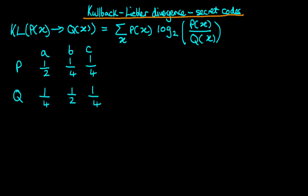In this video I'm going to explain what's meant by the Kullback-Leibler divergence, and I'm going to use an example of transmitting messages using secret codes to try and explain this concept. I've written out at the top here the formula for the Kullback-Leibler divergence, or I'm just going to call it the KL divergence, from going from some distribution p of x to another distribution q of x. But this is a mathematical formula, so what does it actually mean?